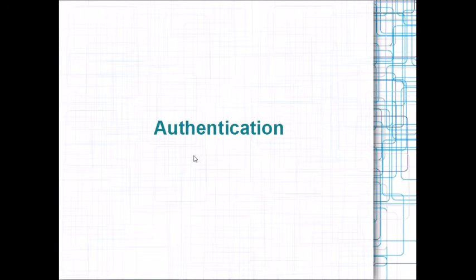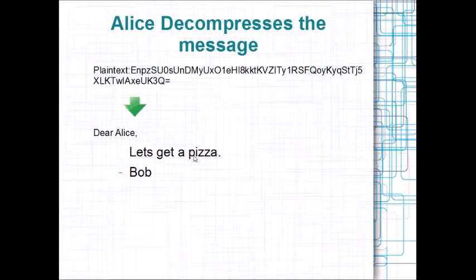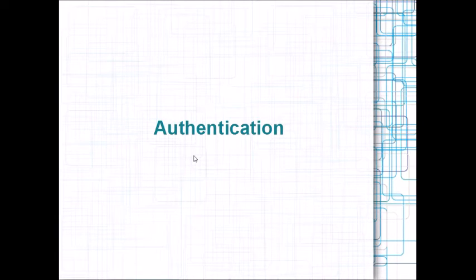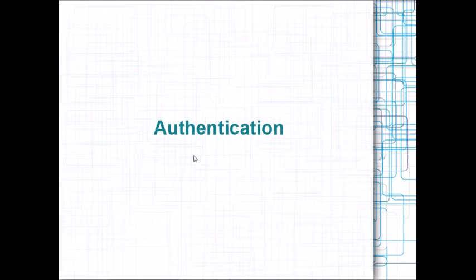What we just saw was how PGP can be used to create confidentiality. Next, we want to talk about how it can be used to establish authentication. These are two different problems in security: confidentiality means we don't want anyone to read the message, while authentication means we just want to be able to prove that it came from the right person — so if Alice gets a message saying 'I'm Bob, do you want to get a pizza?', we want to know it actually came from Bob and not from Trudy or anyone else.